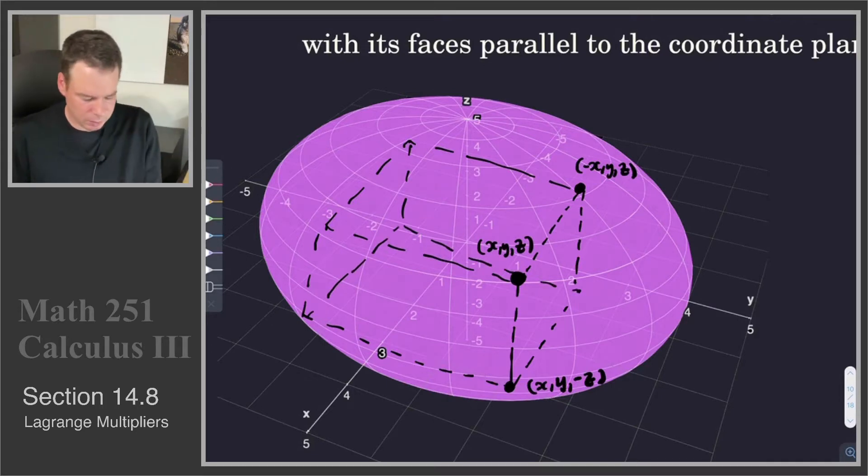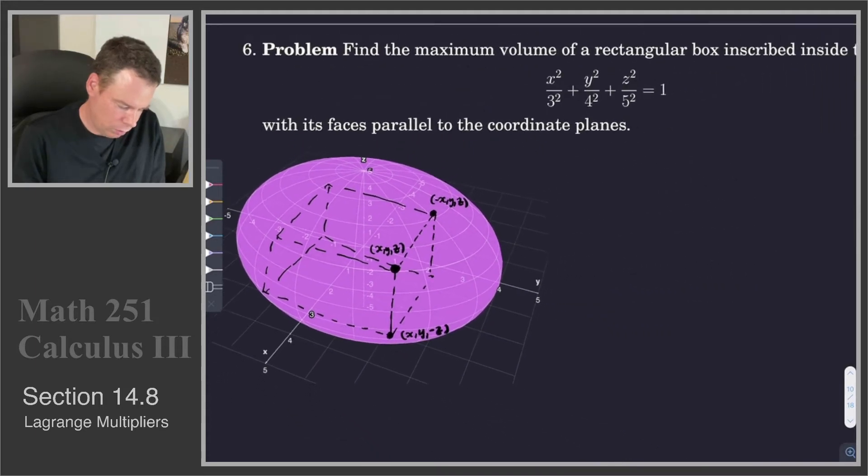So it looks something like that. The main idea is that once we know one of the vertices by symmetry, we get all of the other ones. So we're going to use that.